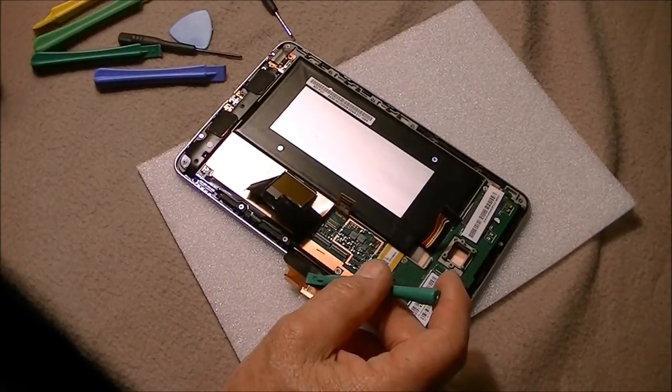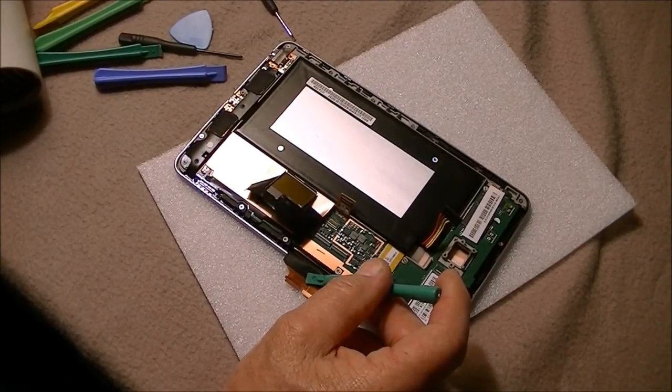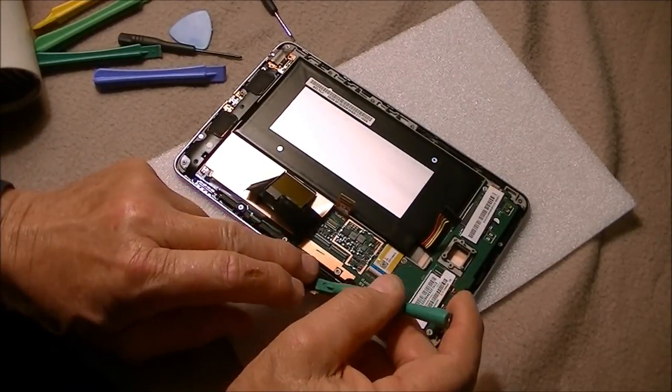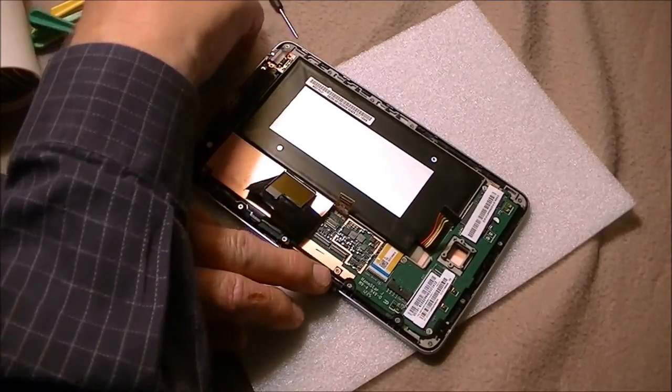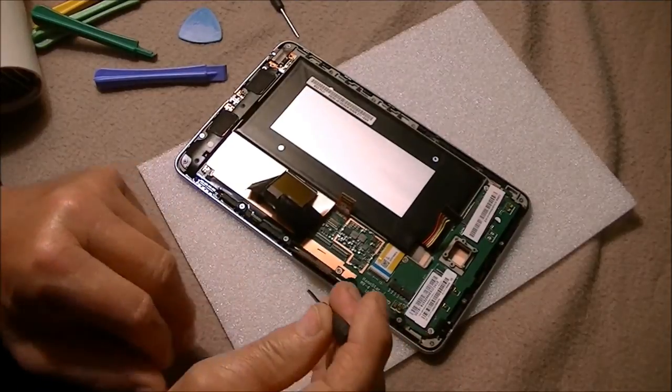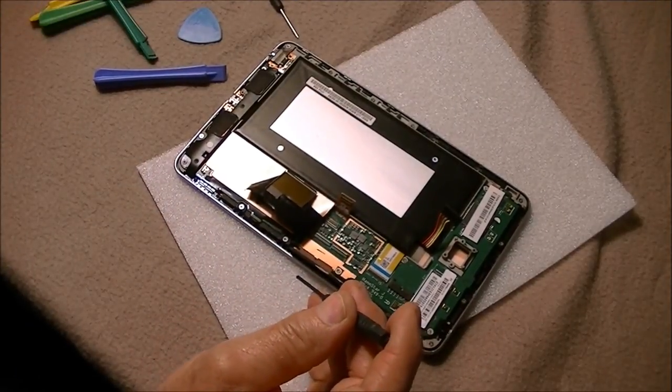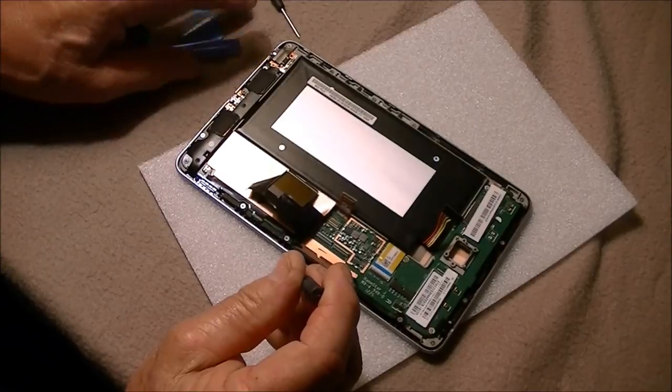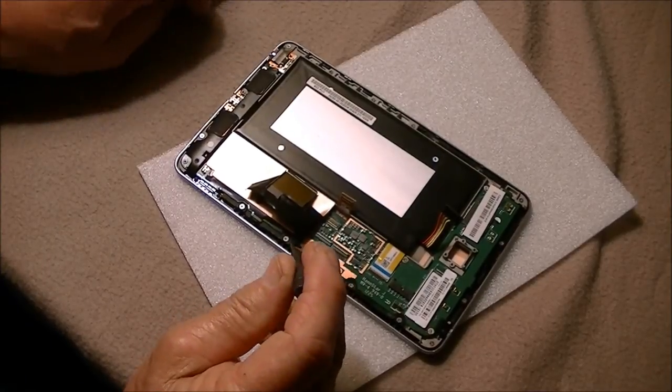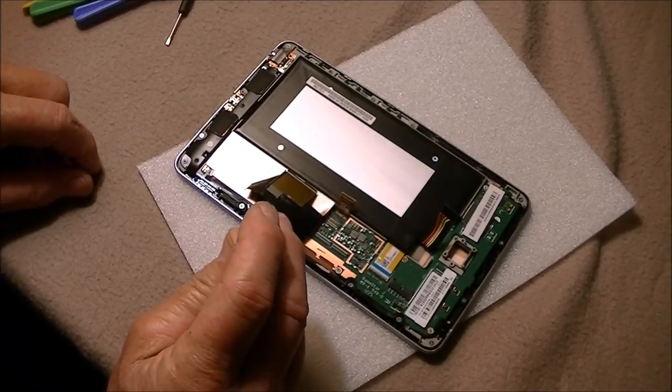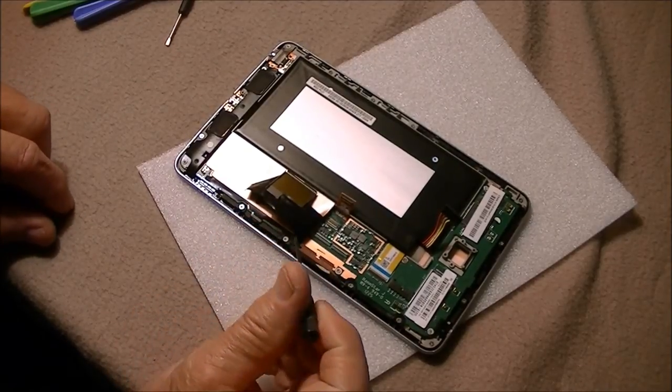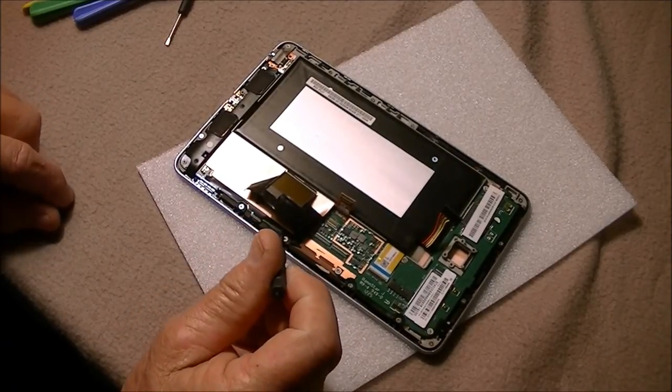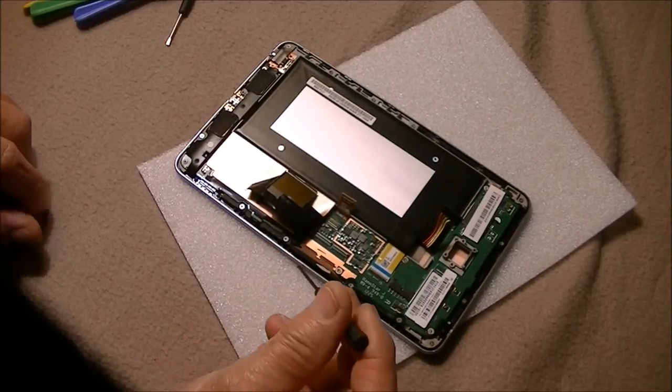Once we get the connectors off, then we've got 15 screws around the outsides. I believe there may be one or two of these screws that are a little bit larger. If so, be sure and check the size and keep the larger ones separate and know where they go. I'll be back in a few moments after I get the screws done.